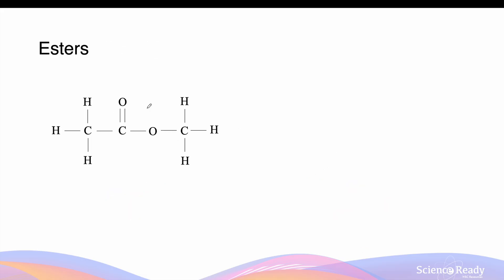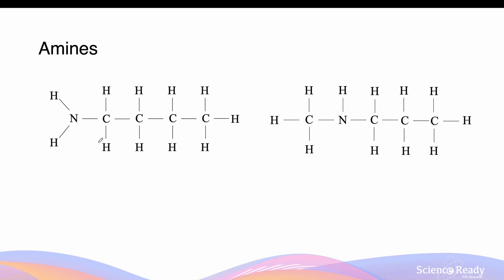Drawing our ester, there is a characteristic double-bonded O and the connection of the carbons at the oxygen side. On the left hand side, we have 2 carbons connected to a double-bonded O and a single-bonded O, and on the right of the oxygen is just the methyl group. For the amines, unlike carbon-hydrogen bonds, we need to indicate that there are nitrogen-hydrogen bonds. This means that when we draw our amine, there will be 4 carbons connected to a nitrogen which has 2 hydrogens, and we indicate it like so. This will be the same for the amine on the right hand side.